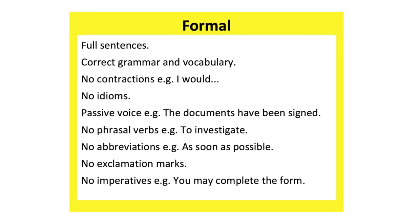Now let's look at the features of formal language. With formal language, we use full sentences with correct grammar and vocabulary. Contractions are shortened versions of words, and we usually place an apostrophe where the letter is missing. We don't use contractions in formal language. For example, we would use the phrase 'I would' instead of 'I'd'.